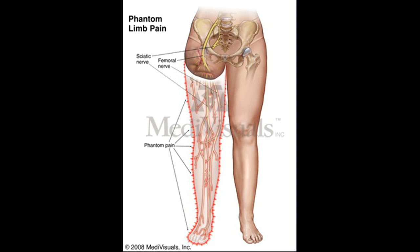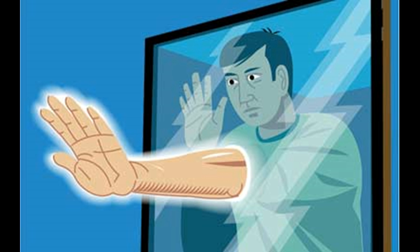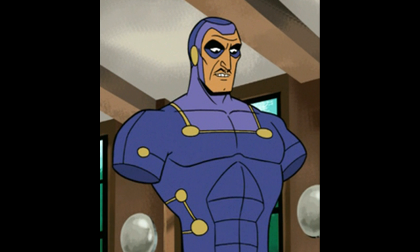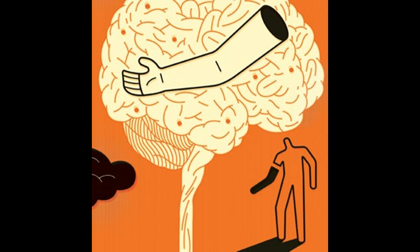Phantom limbs are a fascinating occurrence where the presence of an amputated limb or body part is felt. Ninety to ninety-eight percent of people who have a limb removed experience a phantom. In many cases it fades from consciousness a few days or weeks after the amputation, but it can persist for years (Ramachandran and Hirstein, 1998).